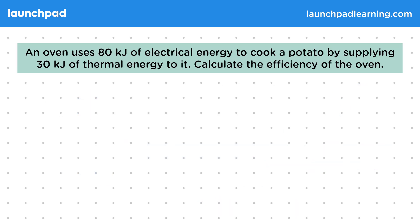Let's have a look at an example. An oven uses 80 kilojoules of electrical energy to cook a potato by supplying 30 kilojoules of thermal energy to it. Calculate the efficiency of the oven.